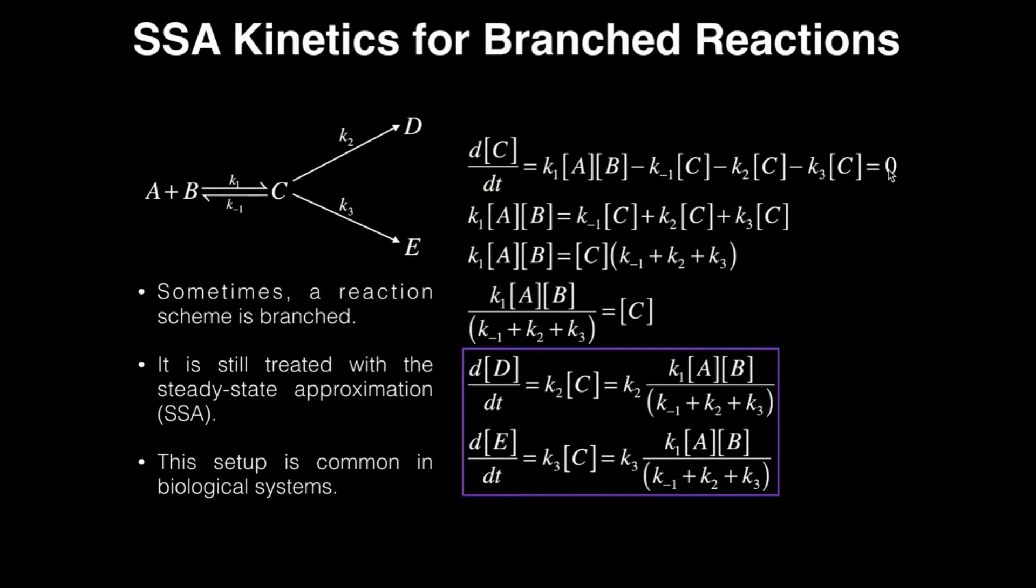Now what I want to do is I want to get all the Cs on one side, and the reason I know to get the Cs on one side is because C is my intermediate. I'm both finding the expression for its rate of change with respect to time, and I'm finding the expression for its concentration. So I get all the Cs on one side, so all these negative terms I'm just going to add over to the other side, and what I'm left with is over on the left side, K1 times A times B is equal to, and then all of these, because they're added over to the other side, become positive. K-1 C plus K2 C plus K3 C.